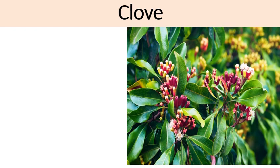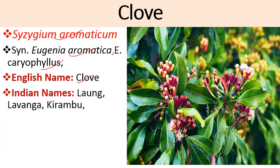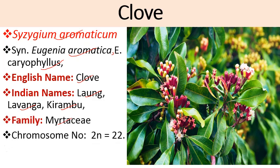The first spice plant we will discuss in detail is clove. Its botanical name is Syzygium aromaticum. This photograph shows the clove plant along with the flowers and floral buds which are used as a spice. Synonyms are Eugenia aromatica and Eugenia caryophyllus. Its English name is clove and Indian names are long, lavanga, and kirambu. It belongs to family Myrtaceae and its diploid chromosome number is 22.